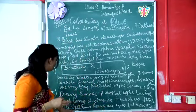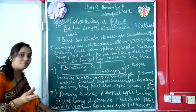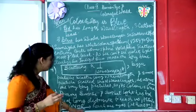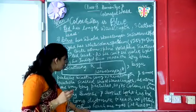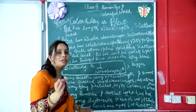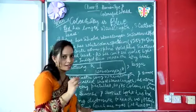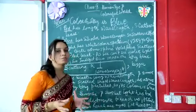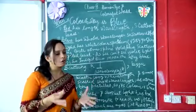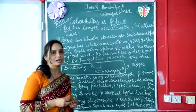While traveling this longer distance, violet, indigo, blue, and green — all of these shorter wavelength colors are scattered away. Only yellow, orange, and red, which have longer wavelengths, have the capability to reach our eyes. This makes the color of the sun appear red or orange during sunrise and sunset.